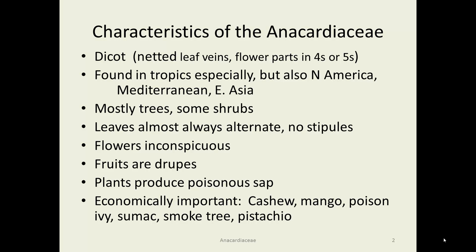Characteristics: we've got a dicot, so that means flowers in certain fours or fives, and the leaf veins are netted rather than parallel. These are primarily tropical species, although there are some elsewhere, and certainly poison ivy grows all over North America.